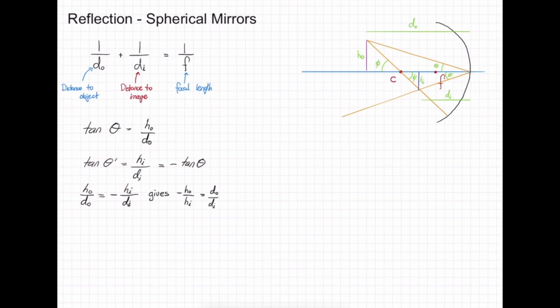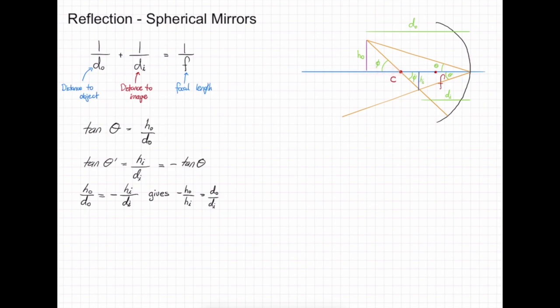Now let's look at our second two triangles, around our PHI angles. Looking at the first triangle with a PHI angle, we look at the relationship between the height of the object and the distance it is away from our centre of curvature. Remember that the centre of curvature is the radius of the circle that is our mirror. So this distance between the object and our centre of curvature is the distance of our object minus the radius. This gives TAN PHI equals HO divided by (DO minus R).